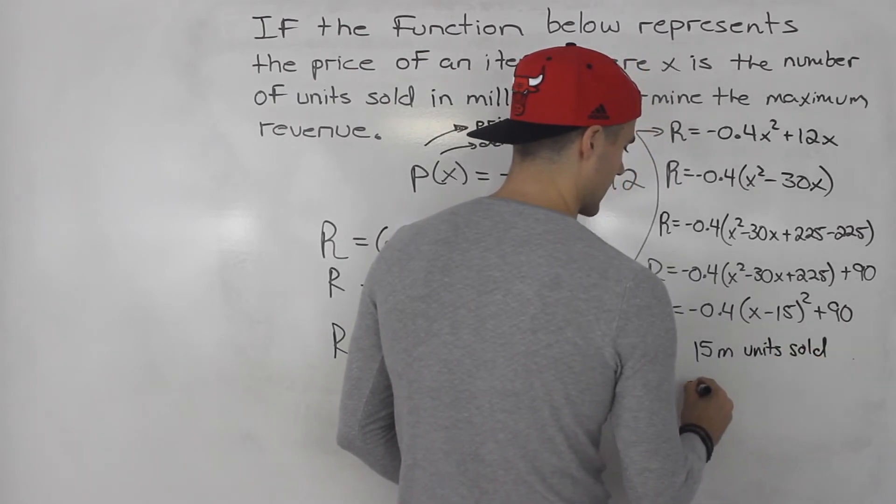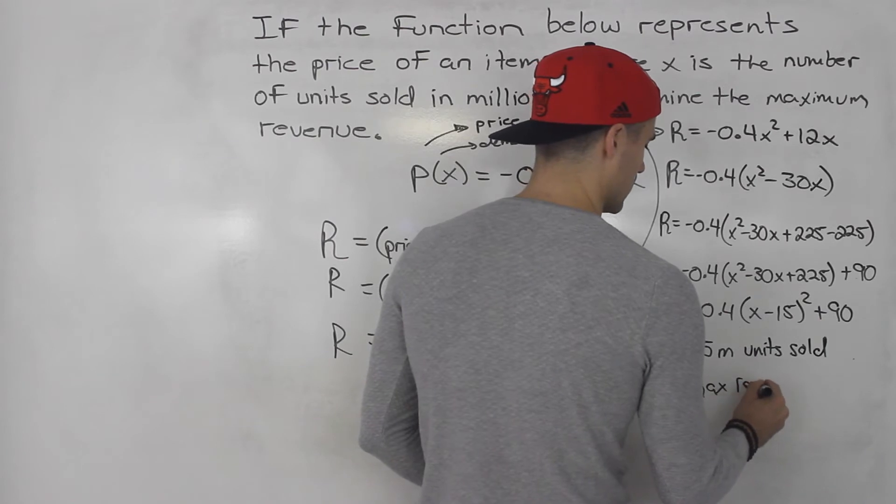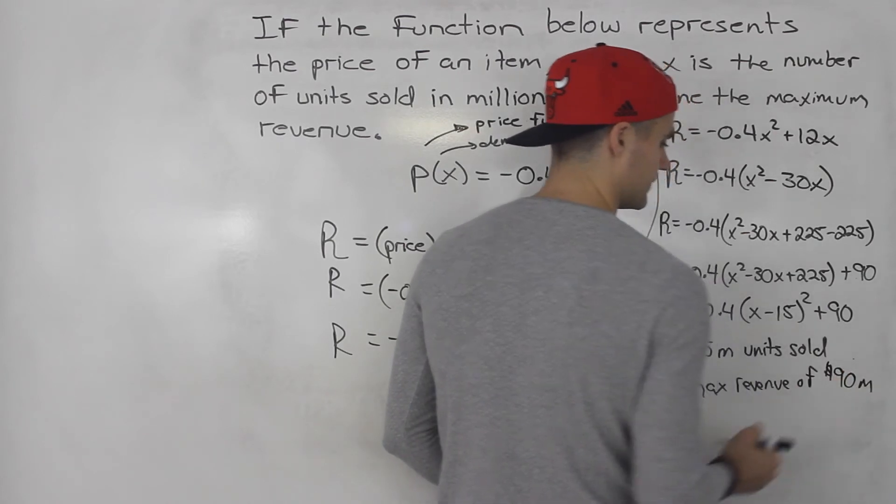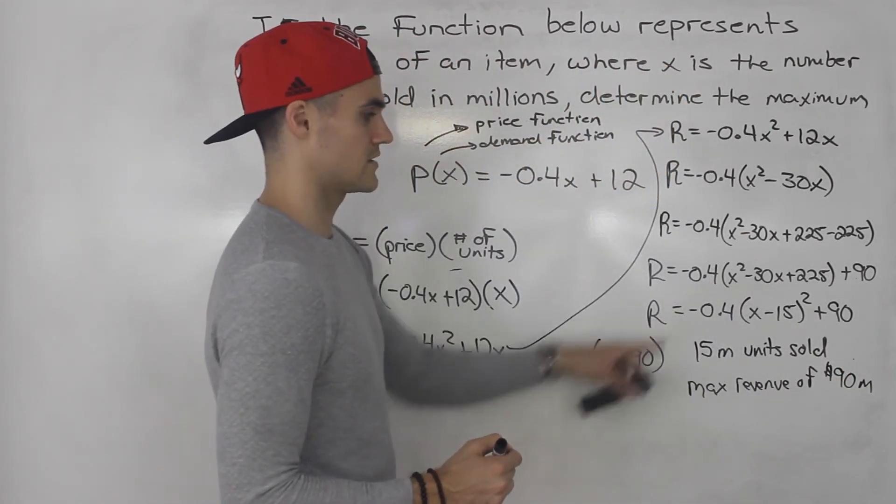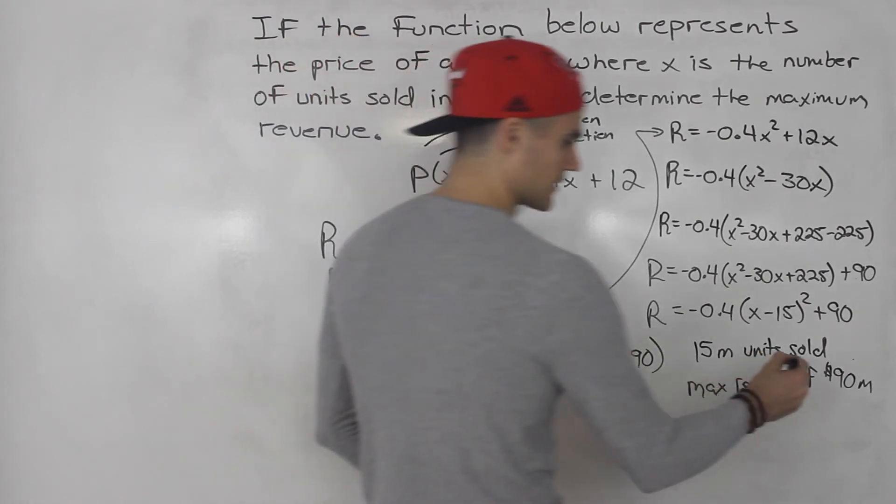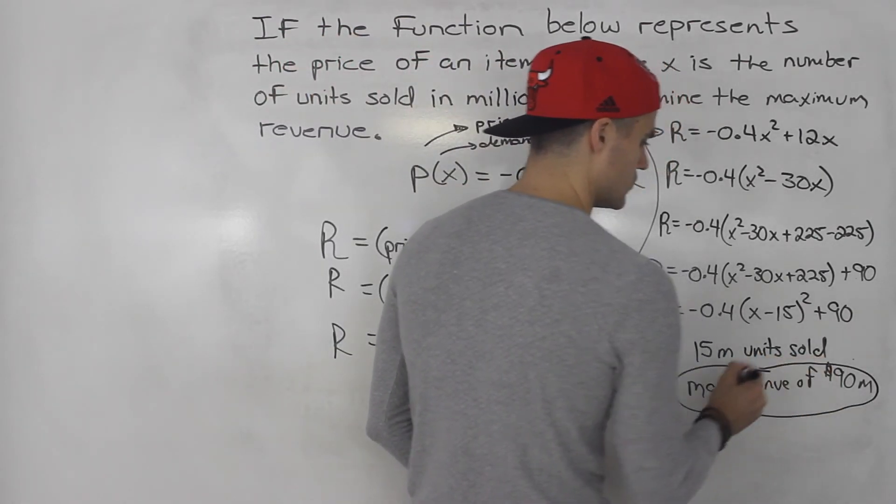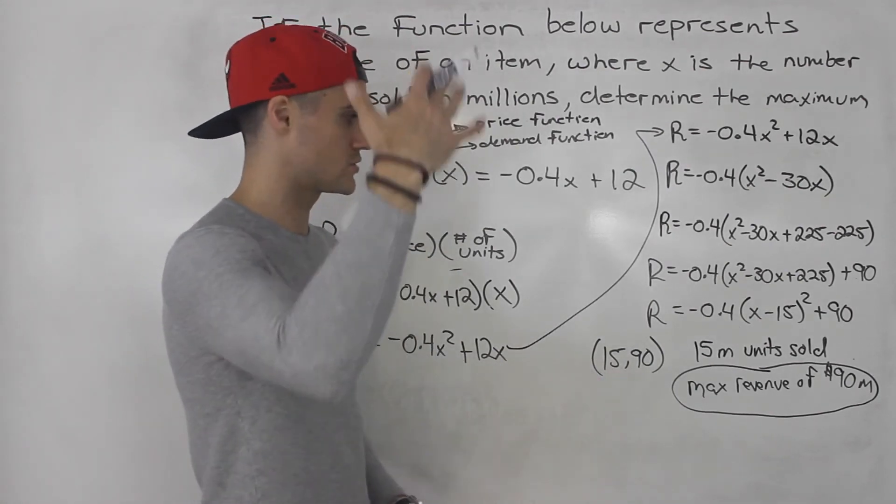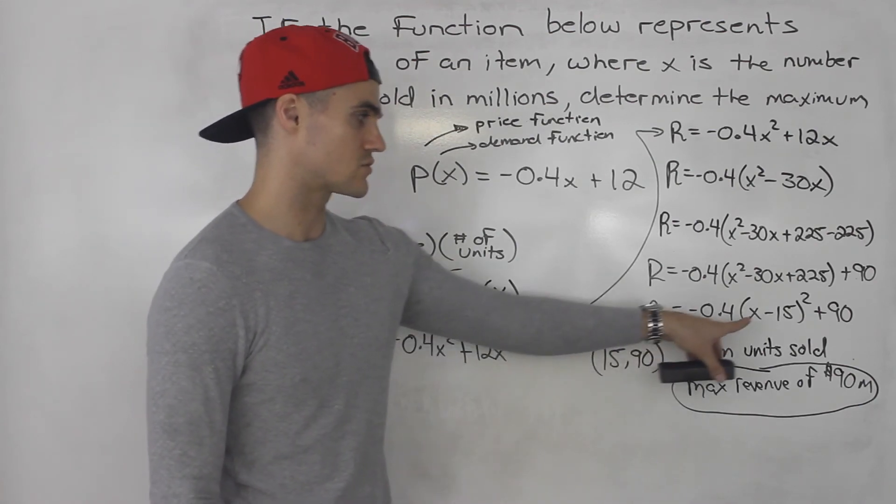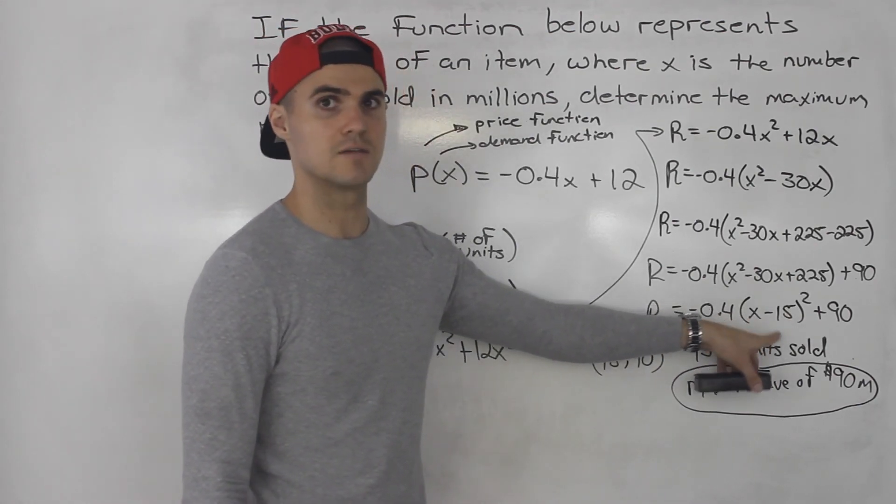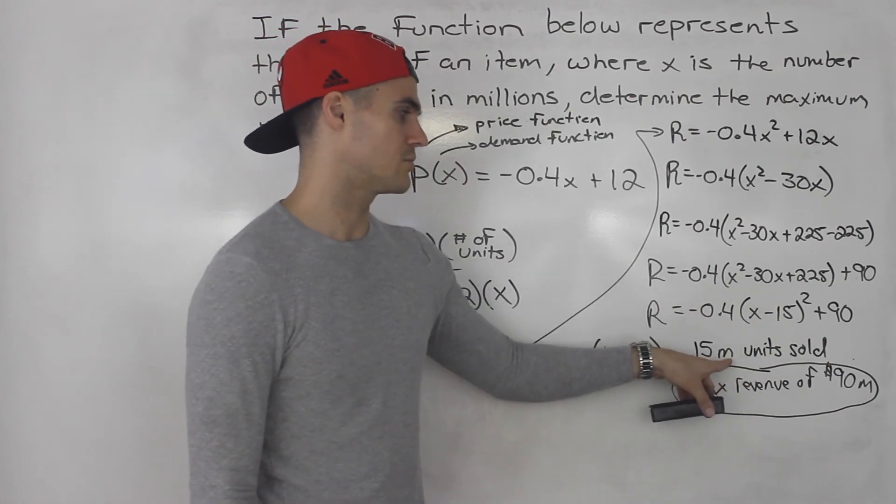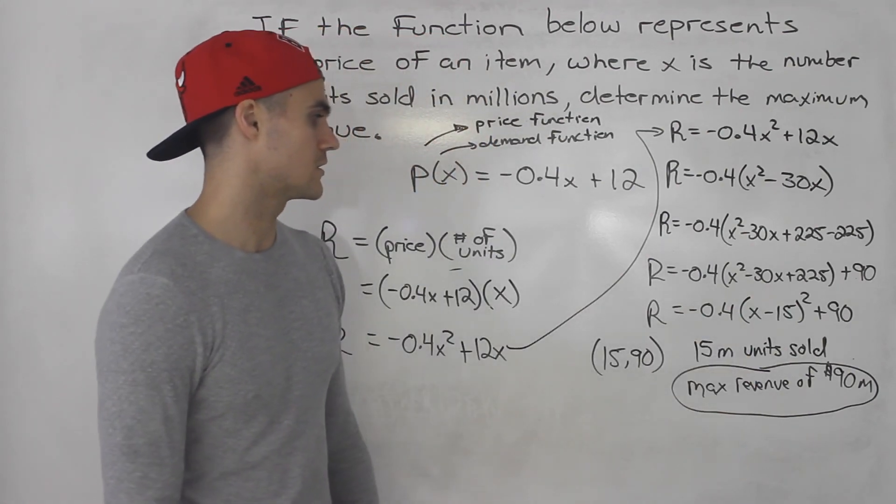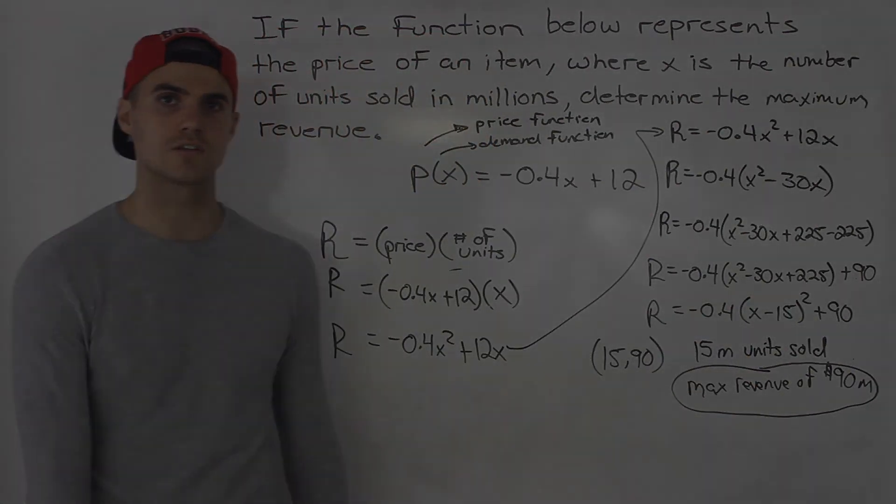That's what this vertex means with this function here. So really what they were asking for is this part, the maximum revenue of 90 million, just the y value. But sometimes they'll also ask you how many units have to be sold in order to maximize revenue, and the answer is 15 million. Because remember this is in millions, so you don't just put 15, you got to put 15 million units sold. Same thing with the y. So the max revenue of 90 million. So that there is your final answer to this question.